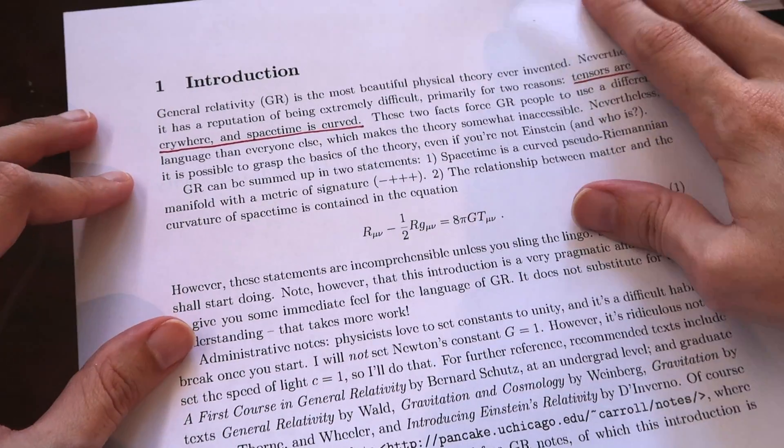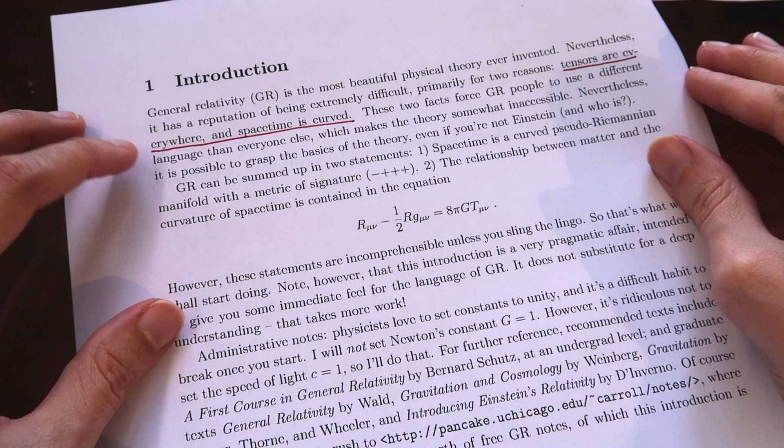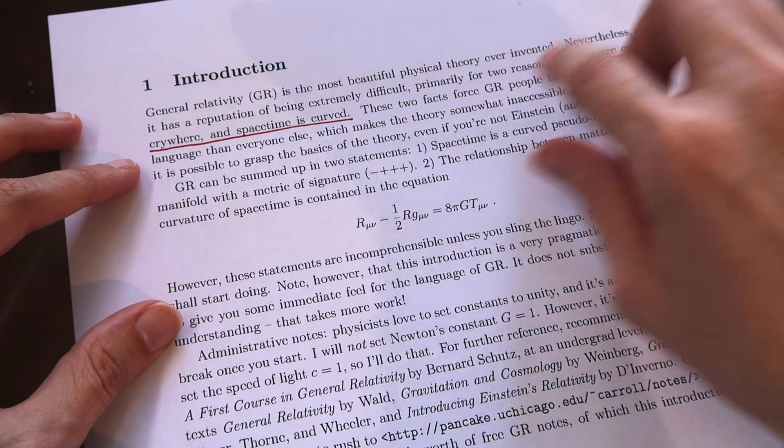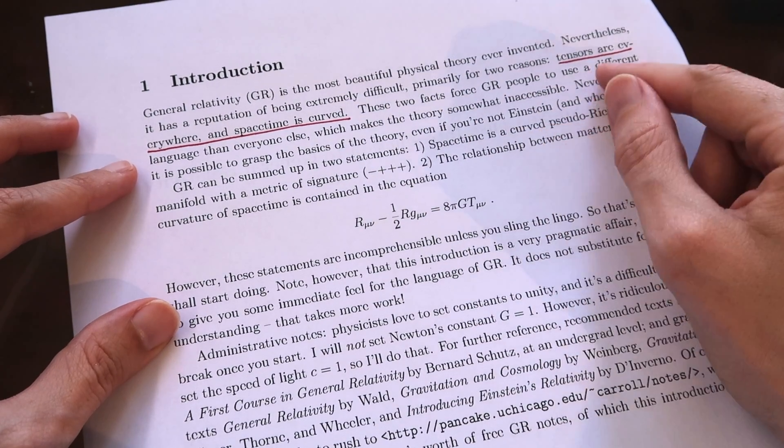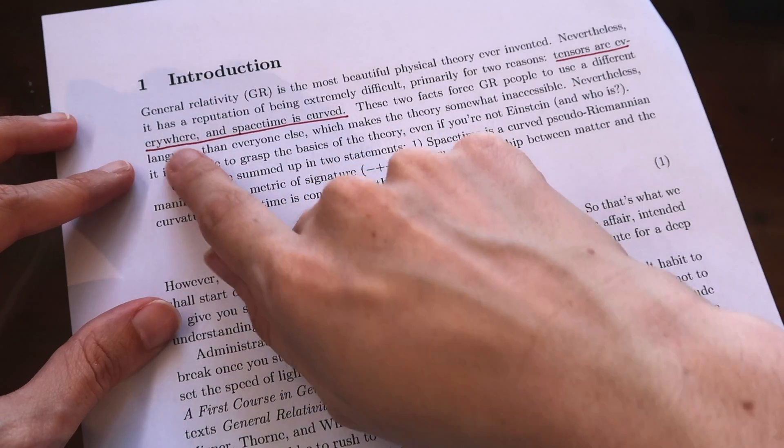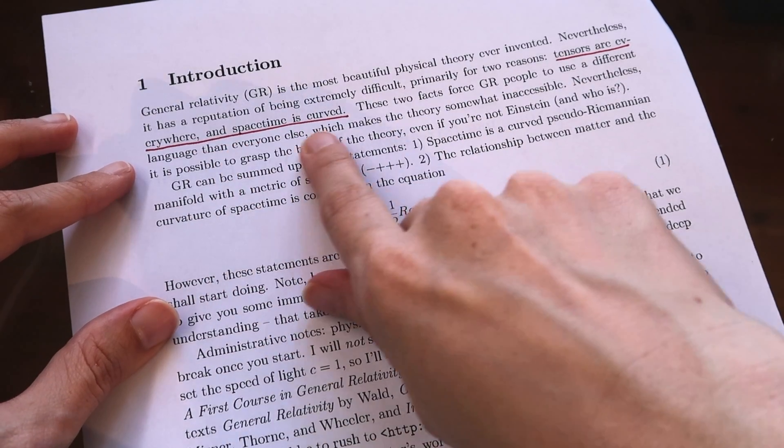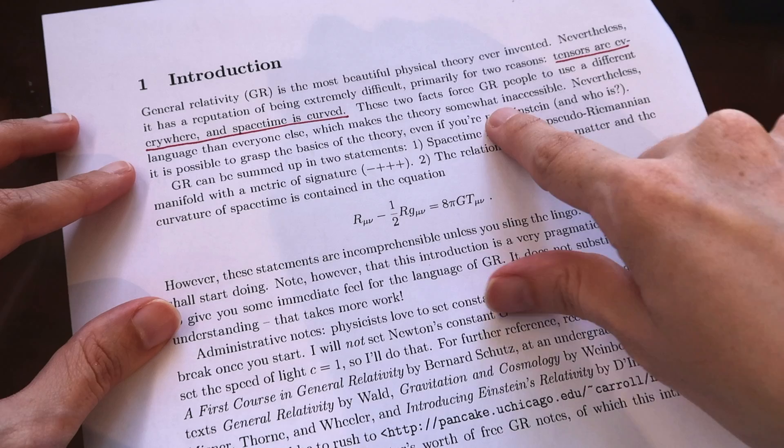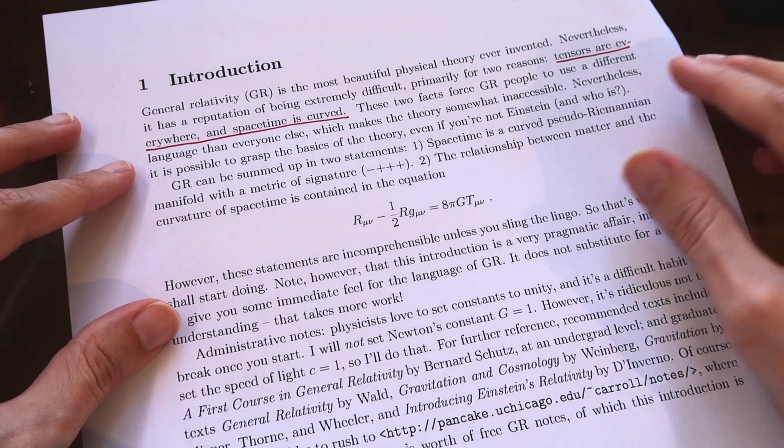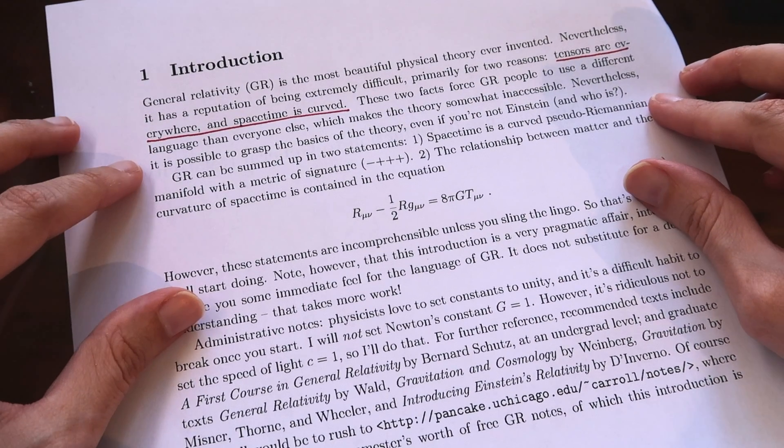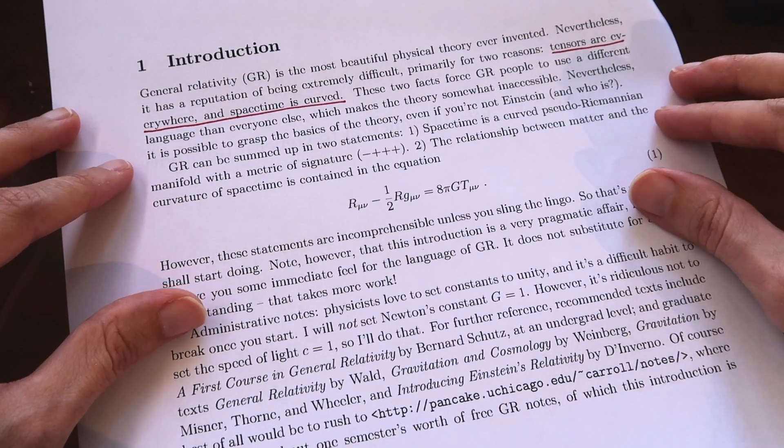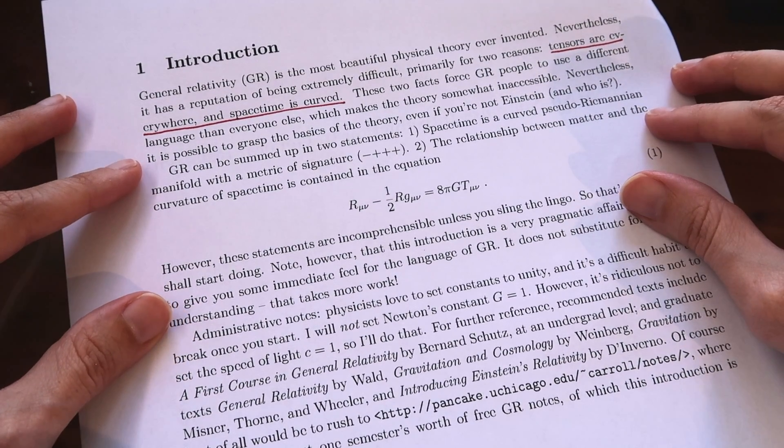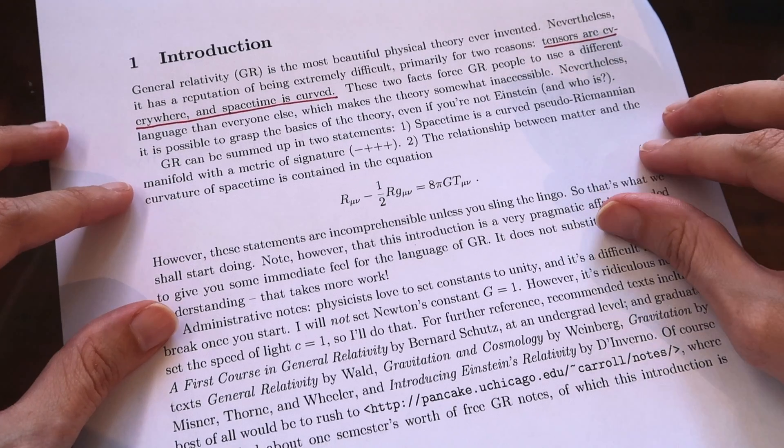So the first page starts off with a bit of an introduction that immediately addresses that general relativity or GR is difficult and it says it's mainly for two reasons: one is that tensors are everywhere and two is that space time is curved. These two facts force people in GR to use a different language than everyone else which makes the theory pretty inaccessible.